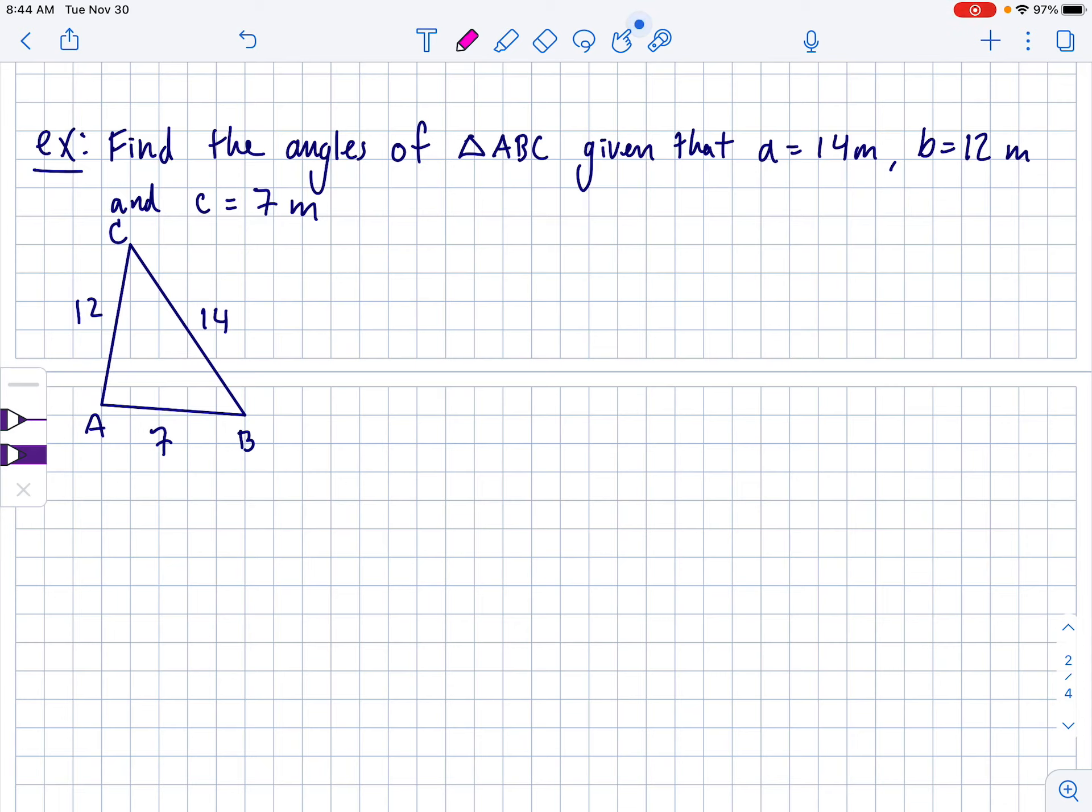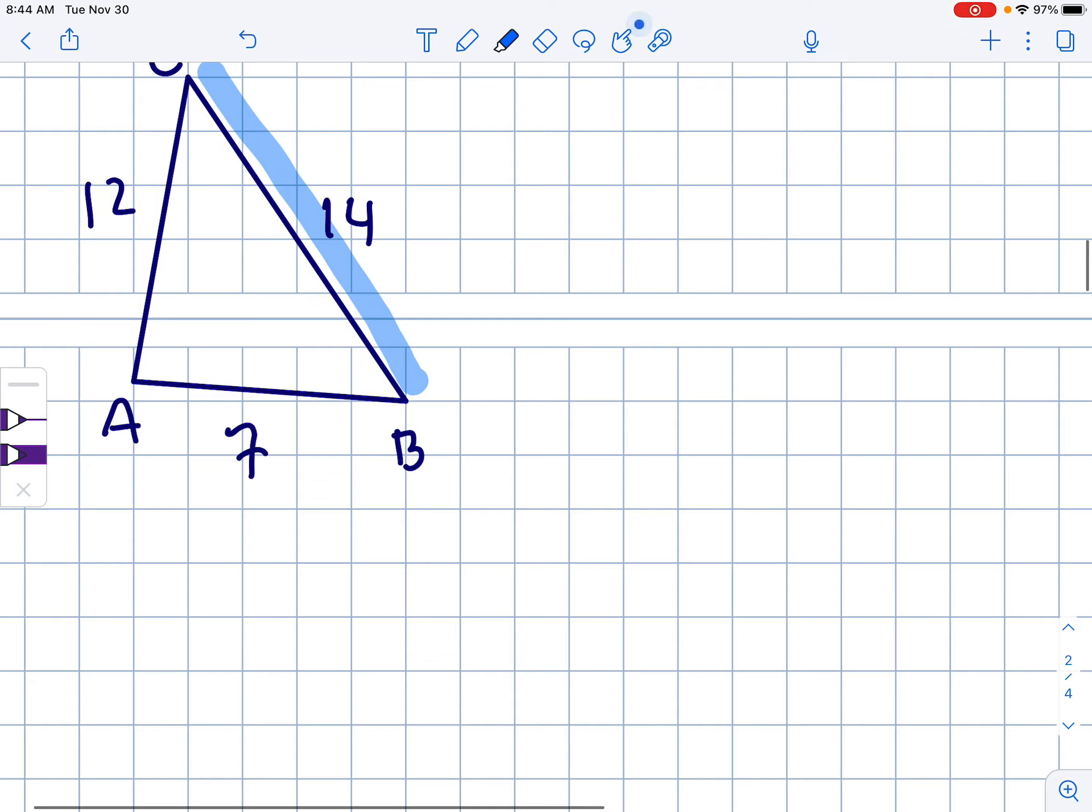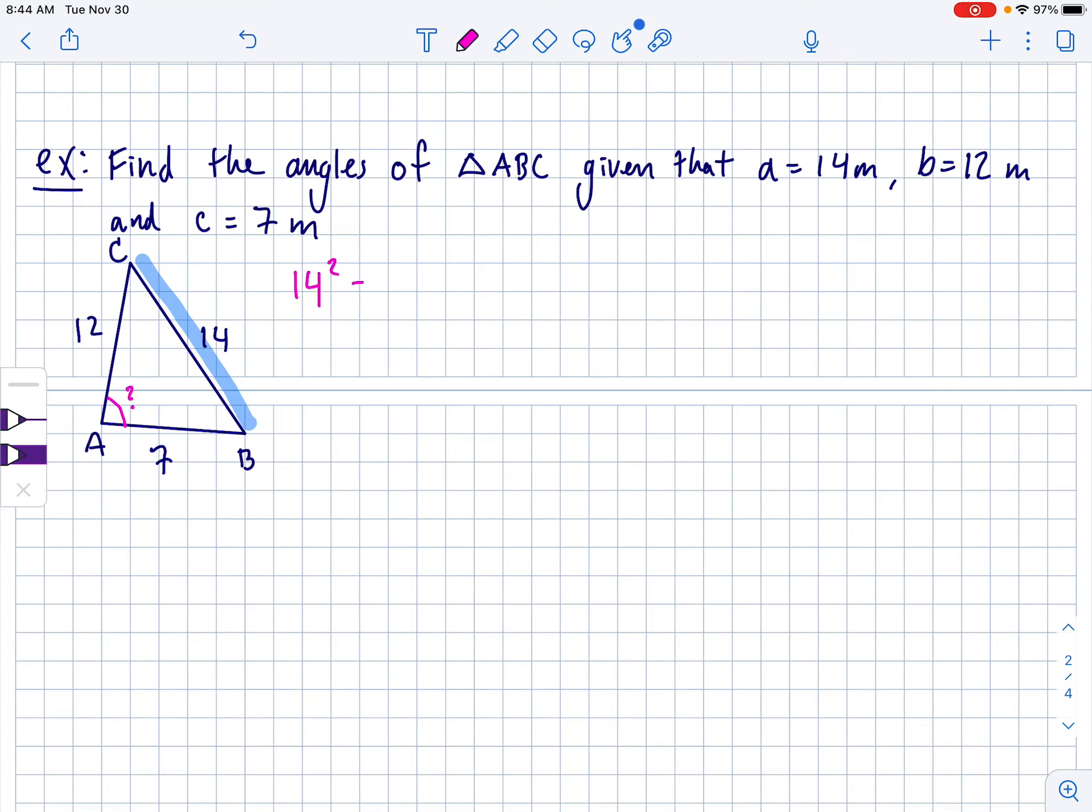I think you should always start with the biggest angle when you do this. Notice that 14 is the biggest side right here, which means that angle A is the biggest angle across from it. So this angle right here is going to be the biggest angle in the triangle. So we're going to set 14 squared equal to 12 squared plus seven squared minus two times 12 times seven times the cosine of capital A. Okay, let's play some cleanup here. 14 squared is 196. 12 squared is 144. 7 squared is 49. 2 times 12 times 7 is 168 cosine of capital A.